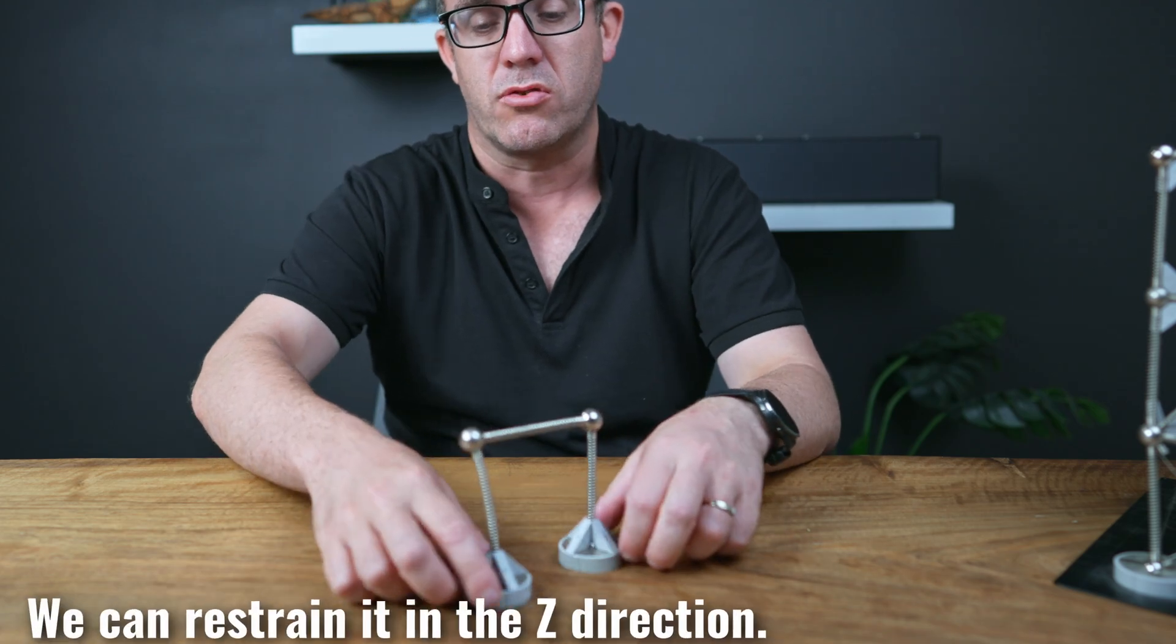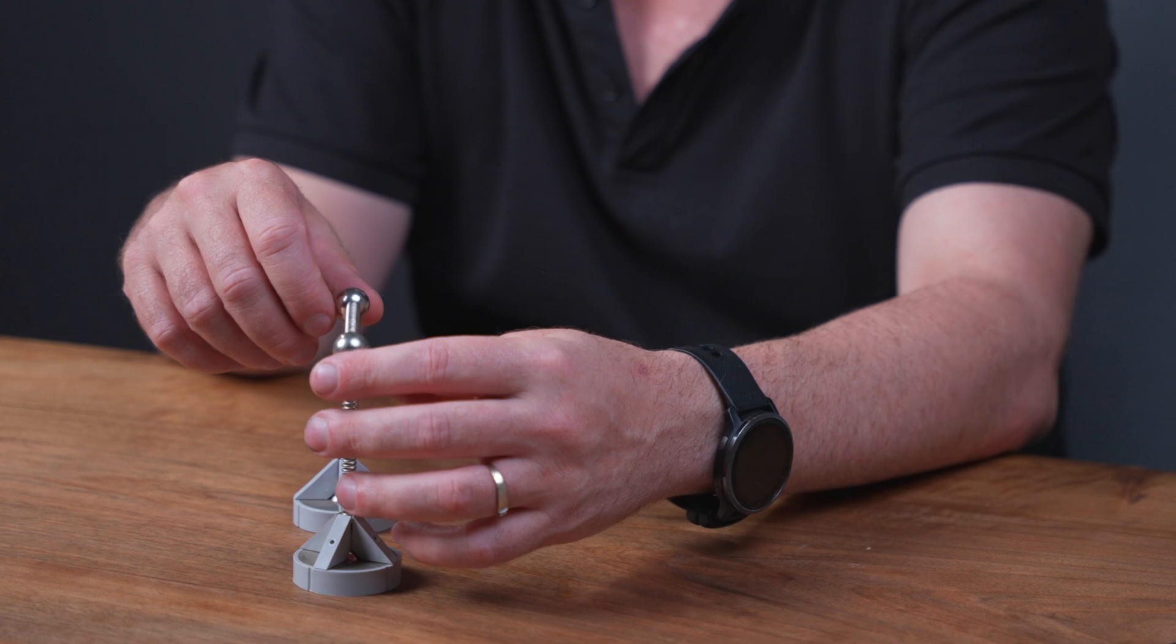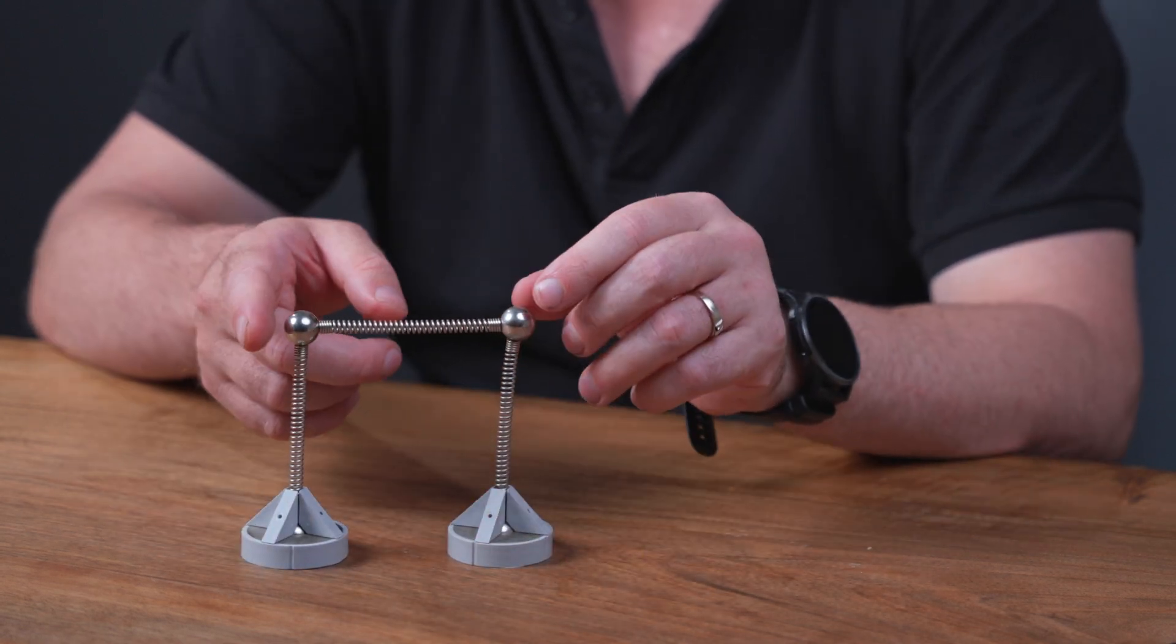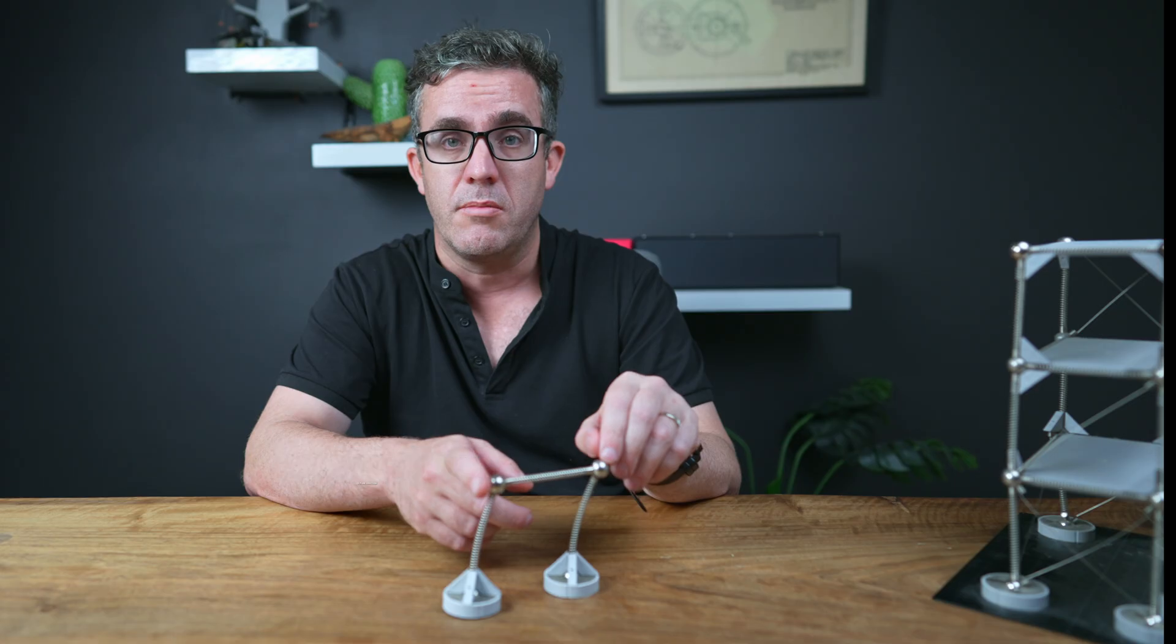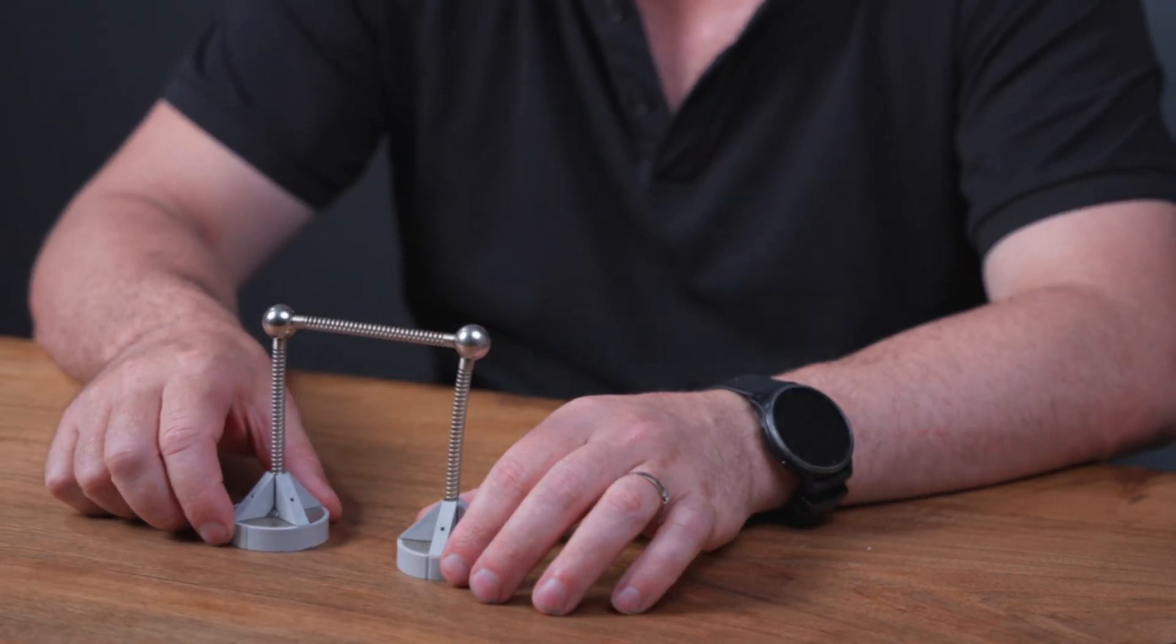What we can also do is potentially restrain it in the Z direction. So stopping it from moving this way, for example. So we're only really worried about how it transfers in the in-plane direction. Hence, a single degree of freedom.